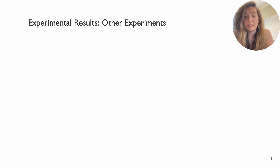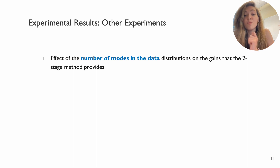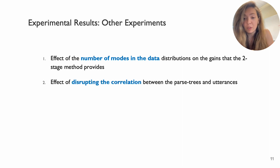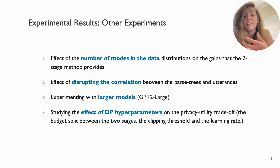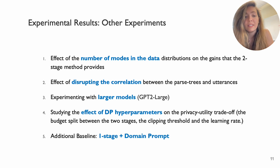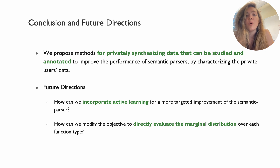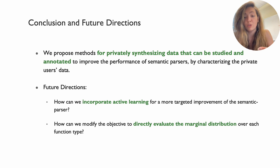We have a lot of other experiments in the paper. We look at the effect that the number of modes in the data has on the amount of improvement you get using the two-stage model, what happens if you disrupt the correlation between parse trees and utterances by shuffling the data, and we experiment with larger models such as GPT-2 large. We study the effect of different DP hyperparameters on the trade-offs between utility and privacy, and we also look at an additional baseline with one-stage training using domain data as prompts. To conclude, we proposed methods for privately synthesizing data that can be studied and annotated to improve the performance of semantic parsers. Future directions include incorporating active learning for more targeted improvement and modifying the objective to directly evaluate the marginal distributions rather than doing latent variable modeling.